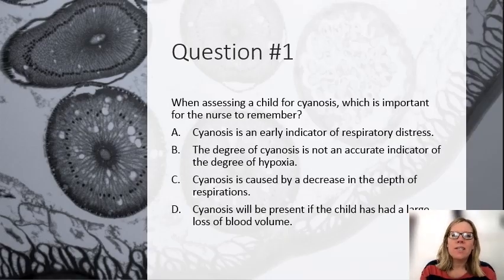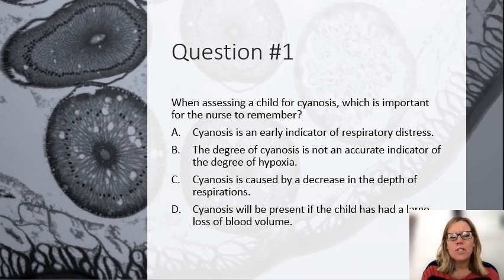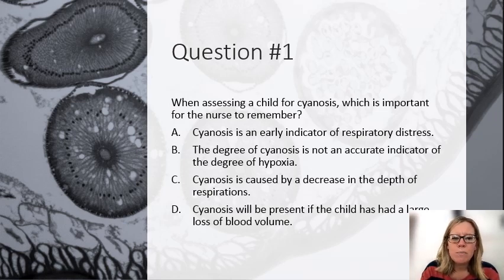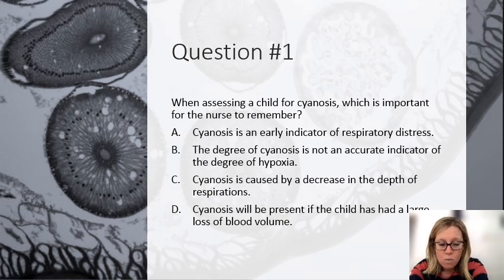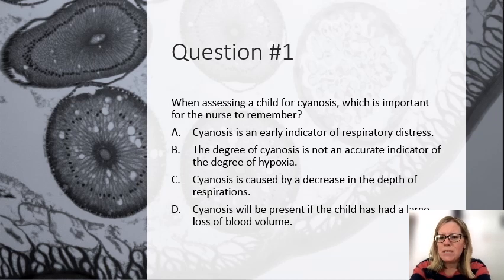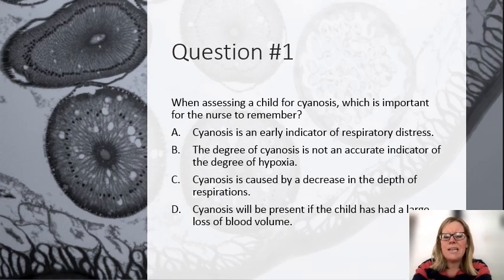NCLEX question: When assessing a child for cyanosis, which is important for the nurse to remember? A — cyanosis is an early indicator of respiratory distress. B — the degree of cyanosis is not an accurate indicator of the degree of hypoxia. C — cyanosis is caused by a decrease in the depth of respirations. D — cyanosis will be present if the child has a large loss of blood volume. The correct answer is B. The degree of cyanosis is not an accurate indicator of hypoxia because if hemoglobin is low, there may not be much cyanosis. Cyanosis is present with a PO2 of less than 40, which is usually a later sign of respiratory distress.